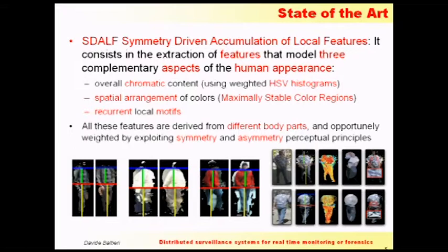On the torso and legs parts, it computes a series of features that describe complementary aspects of human appearance: the overall chromatic content using color histograms, the spatial arrangement of colors using maximally stable color regions, and recurrent local motifs — textures of the image. All these features are computed for these two parts separately, and images are matched using a simple matching function.